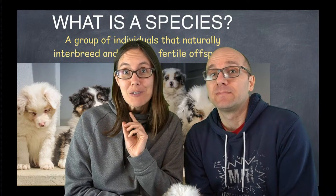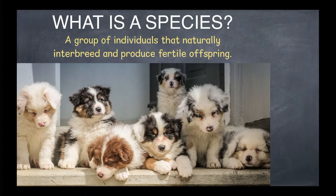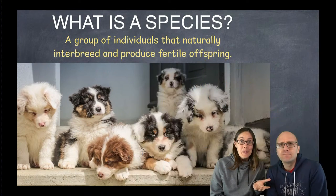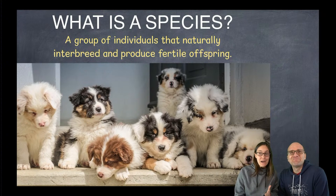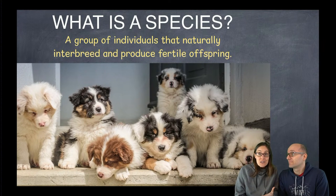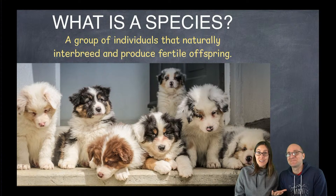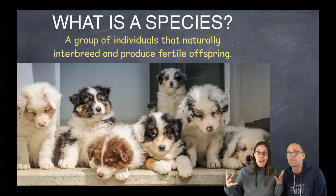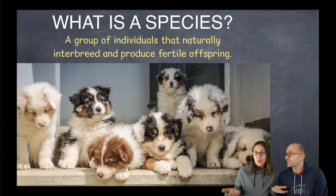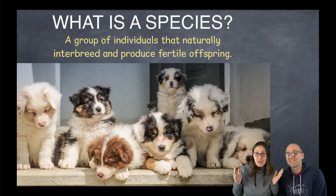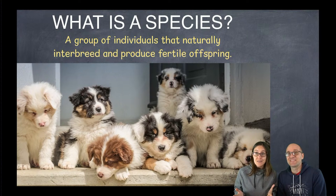But first, I want to review real quick what we learned last time. Last time we talked about the biological concept of a species. The definition we use most often is it's a group of individuals that can naturally breed and produce offspring. The ability to produce offspring is one of the defining characteristics of life.